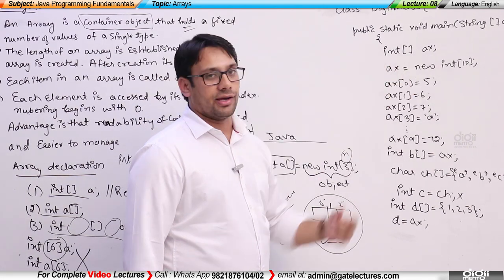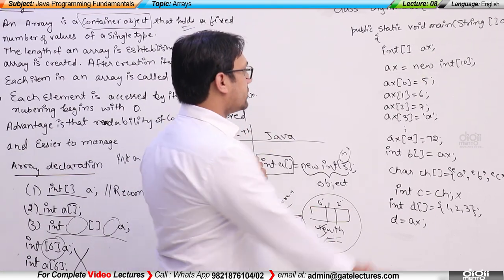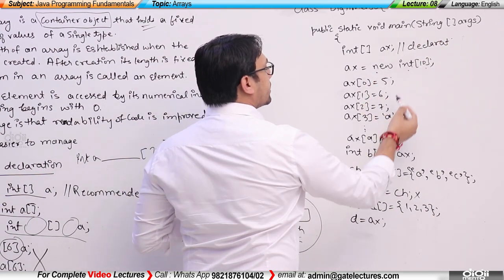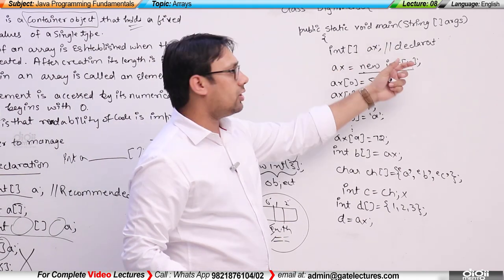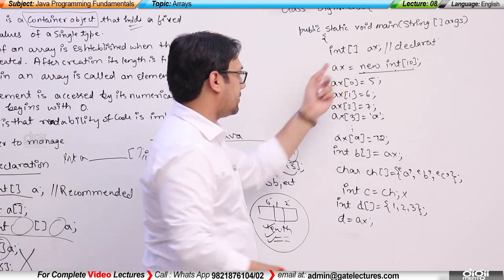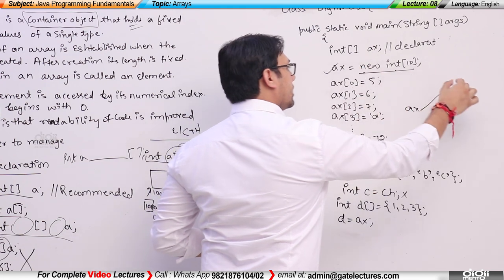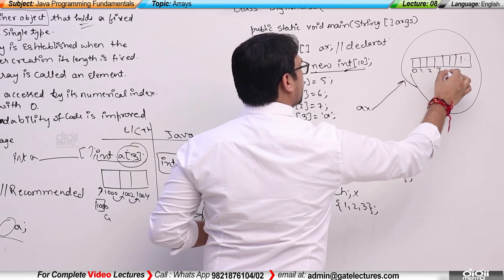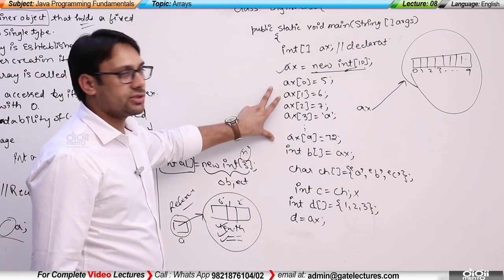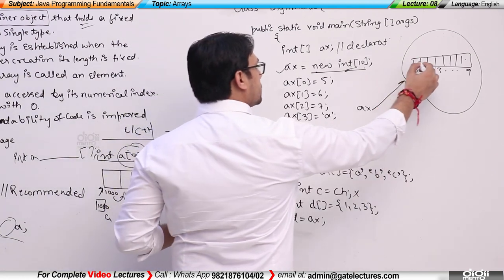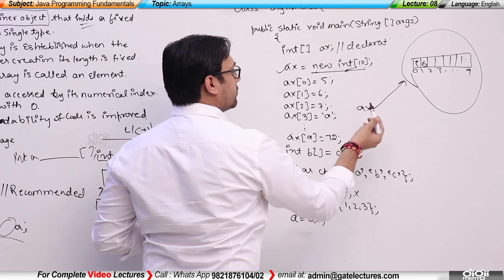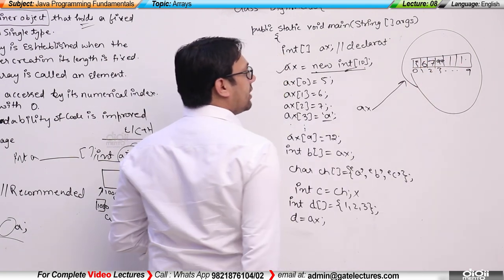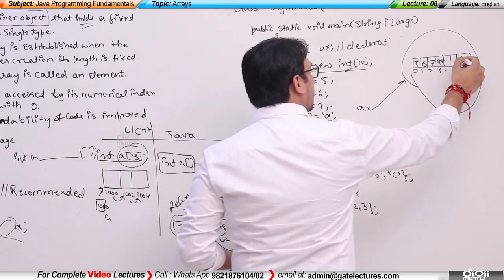Here, declaring int[] ax means ax is an array — this is just a declaration. If I then do ax = new int[10], this is an assignment and I am creating an integer object having 10 memory locations: index 0 through 9. I can then assign values — for example, ax[0] = 5, ax[1] = 6, ax[2] = 7, ax[3] = 'a' (which stores the integer value 97). In this way, for every index location I can store some value.